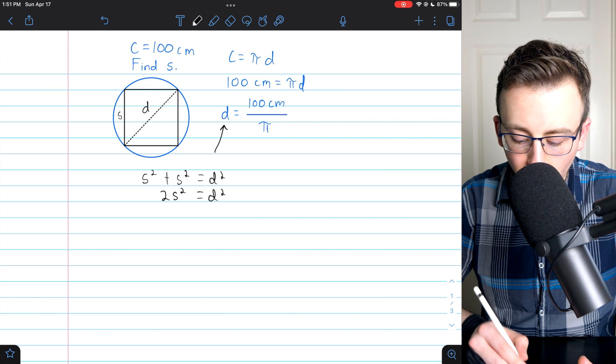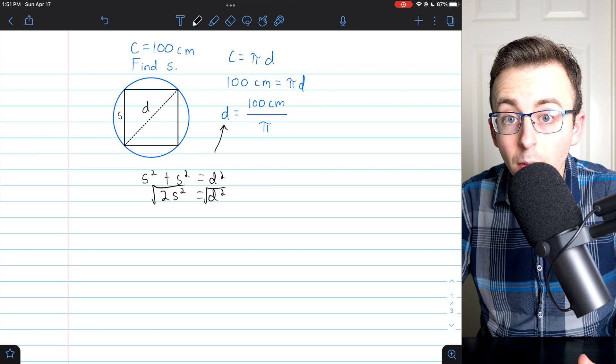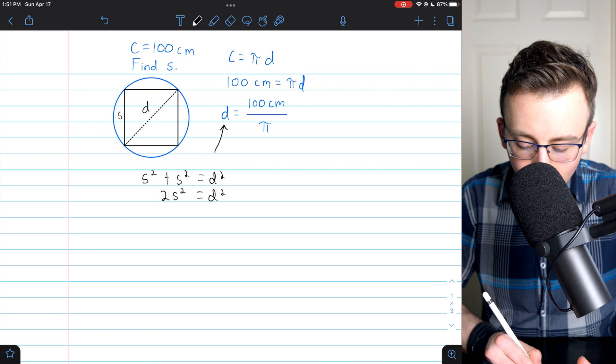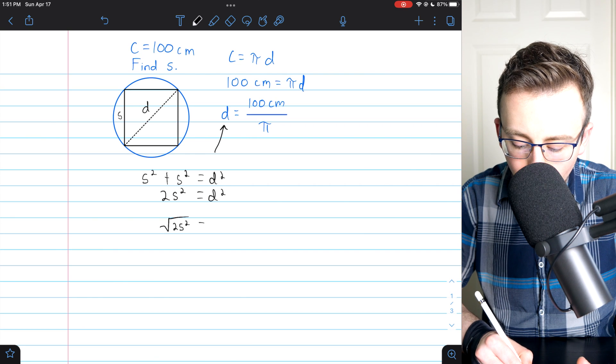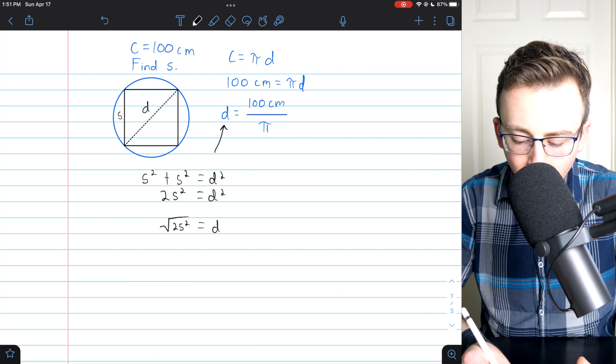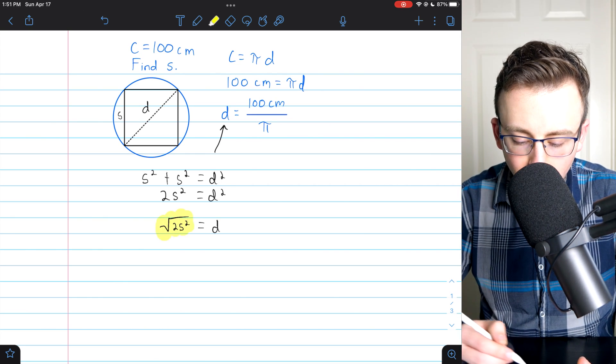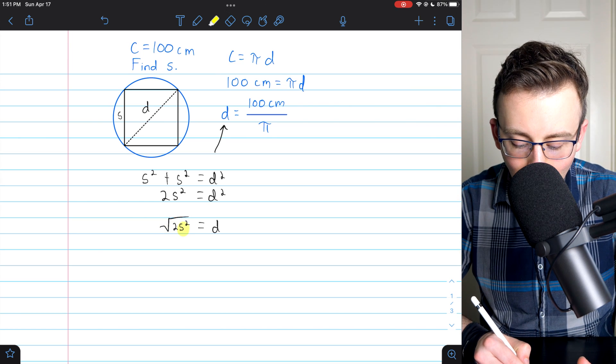Then to finish solving for d, we'll just take the square root on both sides of the equation. That's going to give us that the square root of 2s squared equals d. And we can simplify this square root because it has s squared in it.